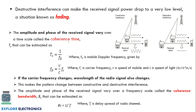Due to destructive interference, the received signal power drops. Even if the phases are not exactly 180 degrees apart, power reduces to a low level — this concept is called fading. Two important concepts related to fading are coherence time and coherence bandwidth. When the amplitude and phase of the received signal vary with respect to a time scale, this is called coherence time.